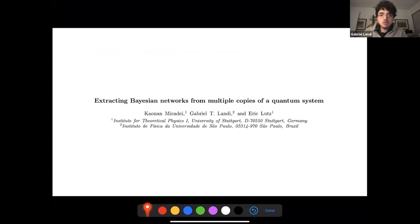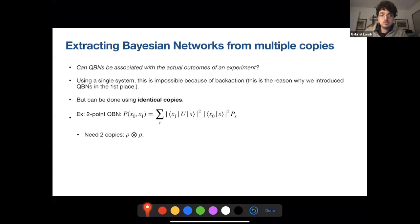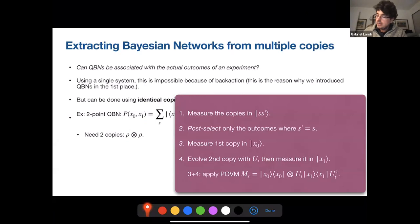And finally, how do we actually obtain a Bayesian network? Well, we recently showed that you can actually do this if you have access to multiple identical copies of a quantum system. So if we have only a single system, it's impossible to construct this kind of probability distribution. Because of course, you will always have back action. So there is no way of obtaining such a distribution from the outcomes of an experiment on a single system. But if we have identical copies, we can. And I'm going to illustrate this with this case, which is a two-point quantum Bayesian network. And if it's two-point, then you need two copies. So two identical copies of the system. And here is the recipe.